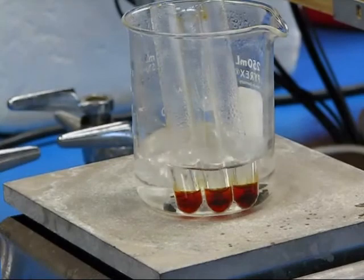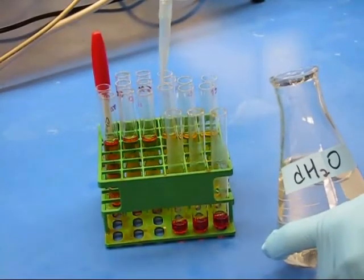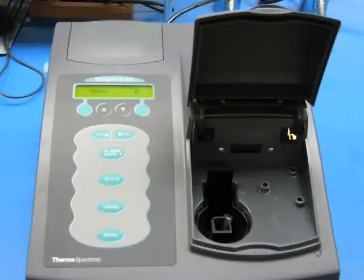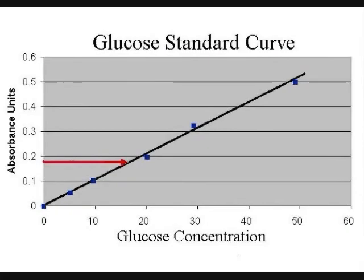When the tubes are cool, add another five milliliters of distilled water to each. Measure absorbance in the spectrophotometer and use your standard curve to extrapolate the concentration of glucose in each sample.